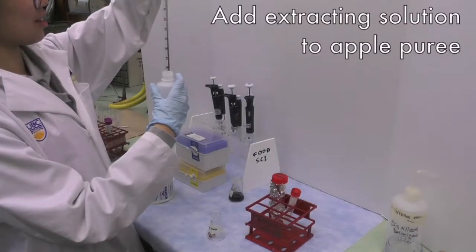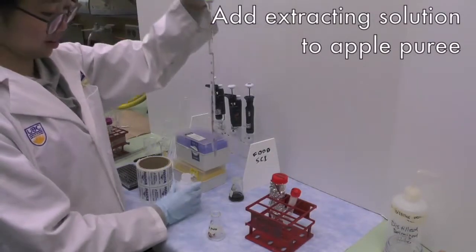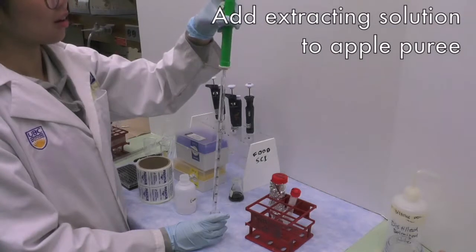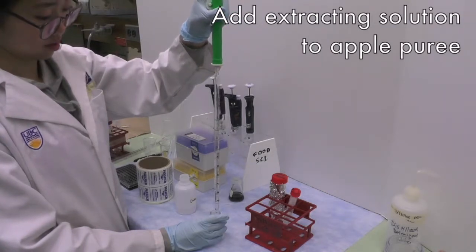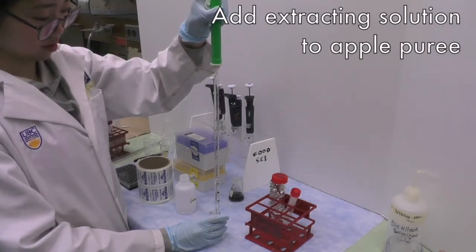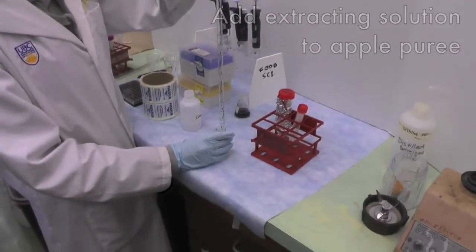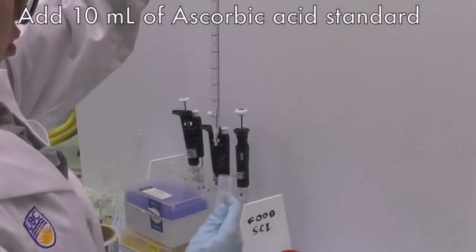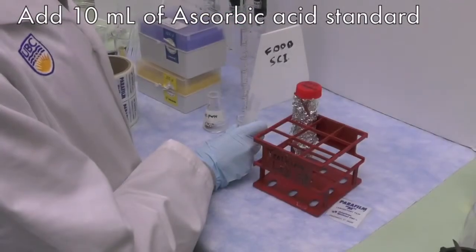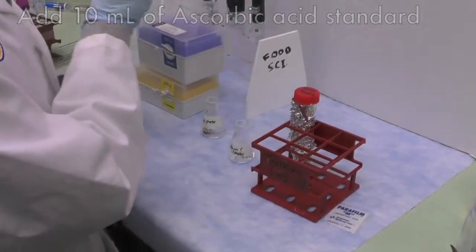Weigh 1.00 gram of apple puree into a 25 ml Erlenmeyer flask and add 9.00 ml of extracting solution. Repeat this for all puree samples, including D-value samples. Prepare 10.00 ml of ascorbic acid into a 25 ml Erlenmeyer flask.